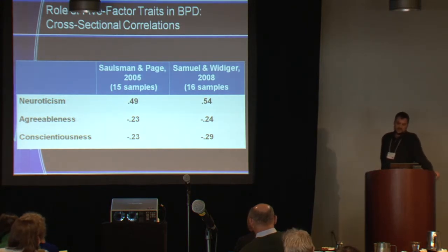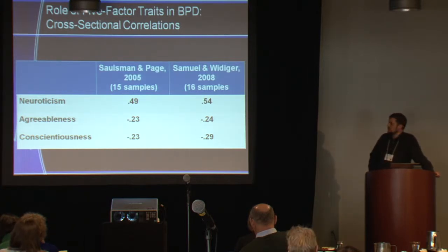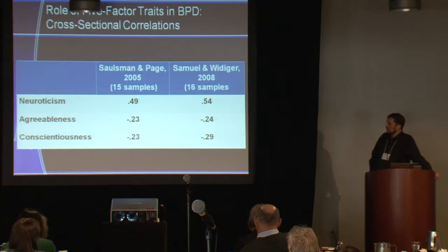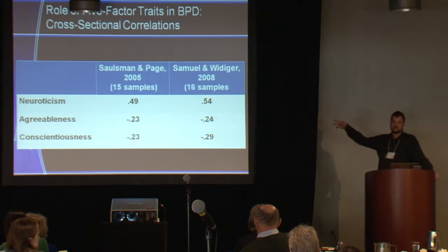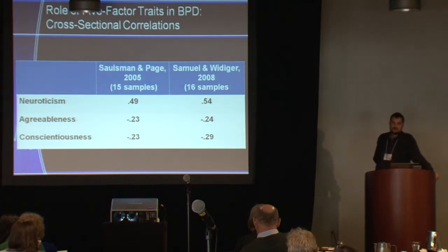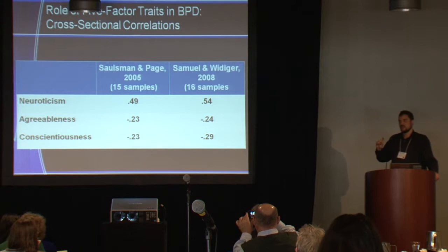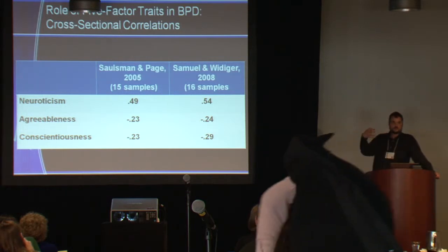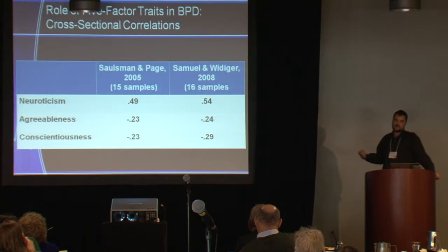What we know about the big five is that they tend to have fairly strong relationships to personality disorders. Here are the results of two meta-analyses — Salseman and Page, as well as Samuel and Whittaker — of independent samples, 15 in the first and 16 in the second. These are the meta-analytic correlations between three of the big five traits that have the strongest relationships with borderline personality disorder. High neuroticism, low agreeableness, and low conscientiousness tend to provide consistent and fairly robust correlations with BPD. The Samuel and Whittaker meta-analysis also presents relationships at the facet level.